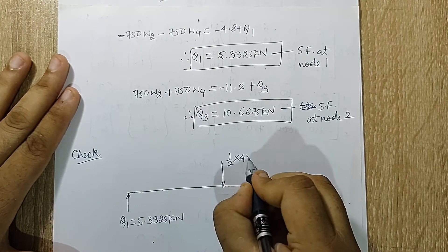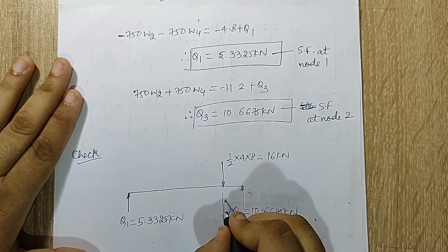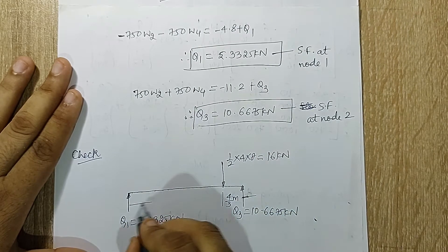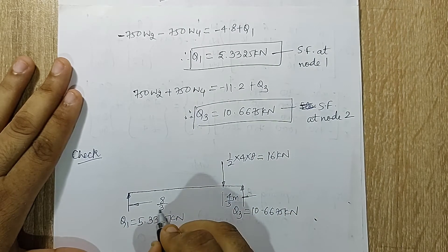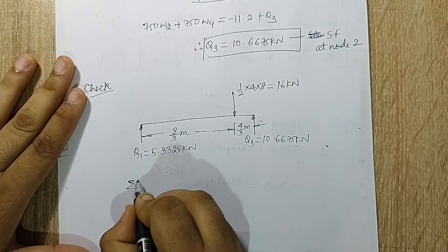So I will be placing it as half times 4 into 8, which gives me 16 kN, and this distance will be 4 by 3 meters. So this will be 2 times 4 by 3, which is 8 by 3 meters.